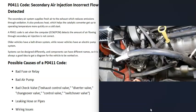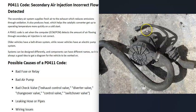Another cause is some kind of leak in the system — one of the hoses or pipes connecting everything may be leaking. You can go through and examine all the pipes, hoses, and connections to be sure they're all good. Also, a wiring problem can cause this code — for example, a wiring issue going to the air pump or to a control valve will cause problems.